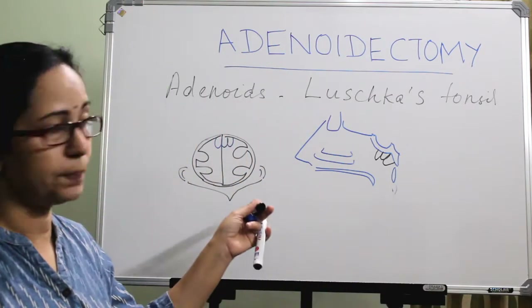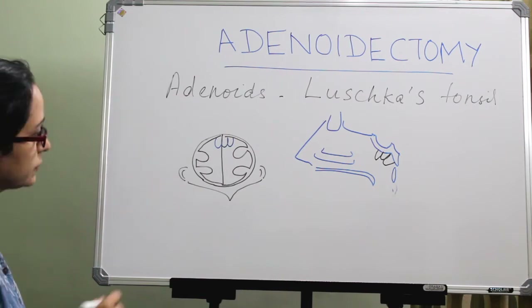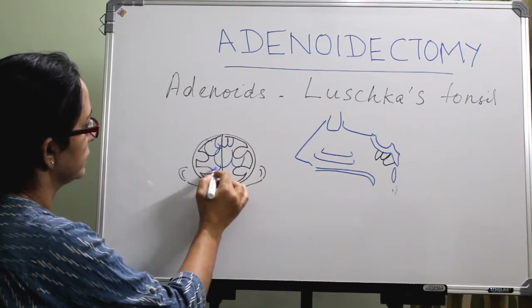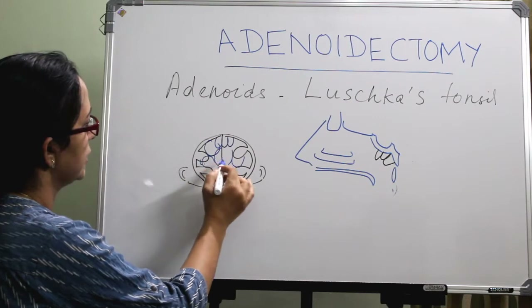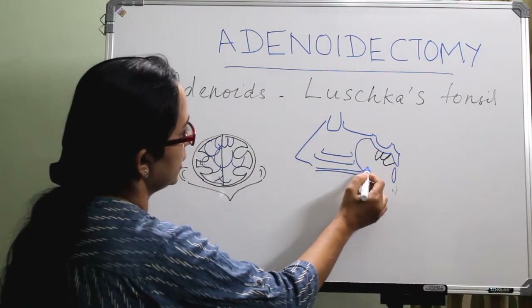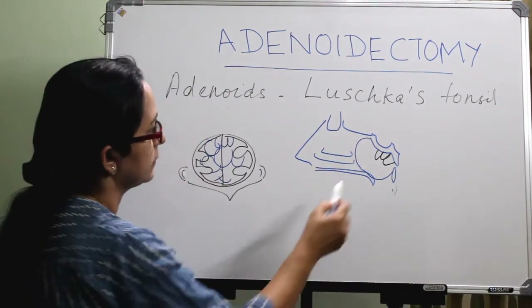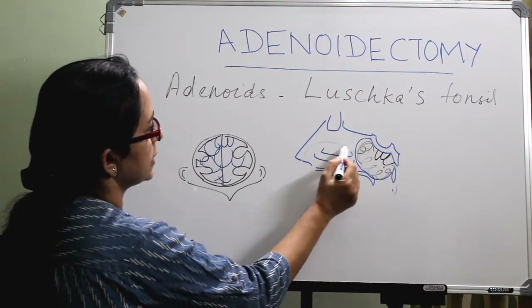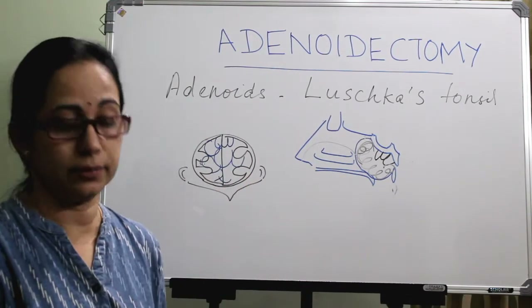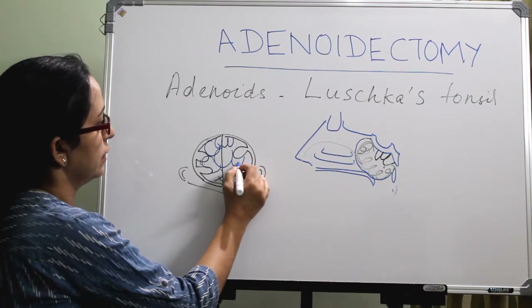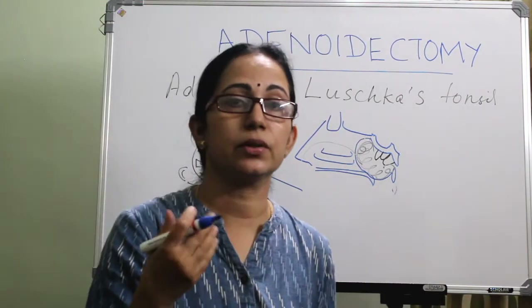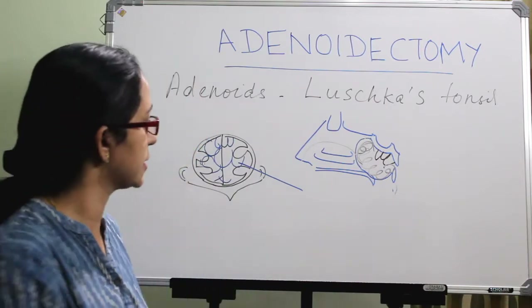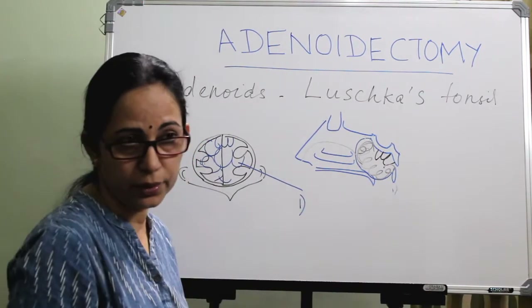The indications can be derived from the picture itself. When the adenoid enlarges, it completely blocks the choana. If it is completely closing the choana, the child cannot breathe through the nose. So there will be nasal blockade, and also voice changes — adenoid hypertrophy causing voice changes.